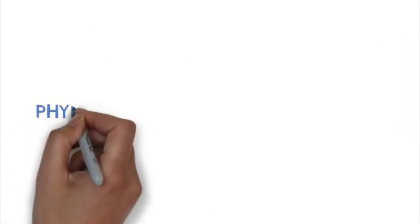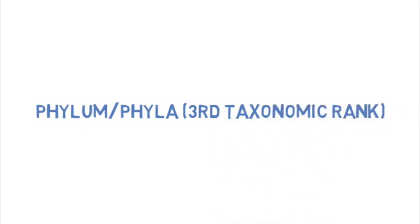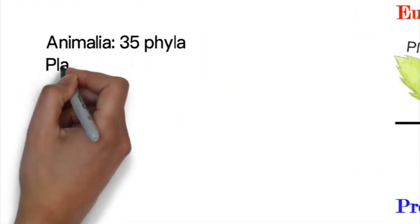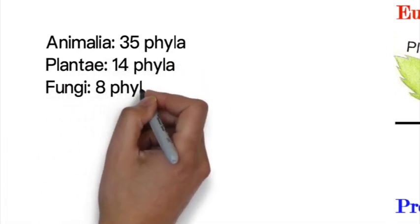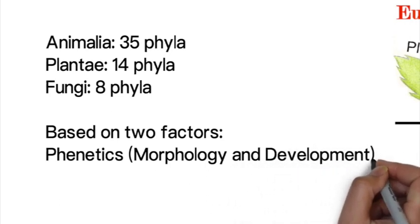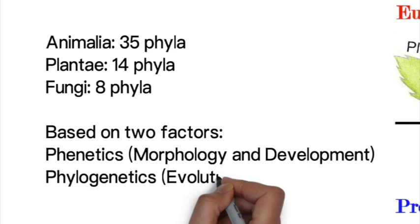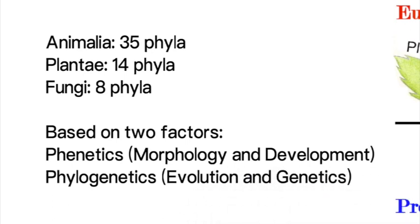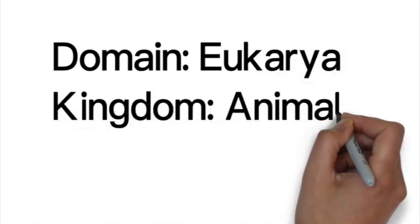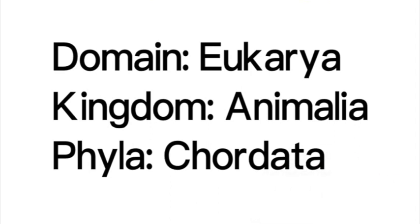Kingdoms are then broken down into the third taxonomic ranking called phylum, or phyla in plural. The animal kingdom breaks down into about 35 phyla, plants into about 14, and fungi into about eight. Phylum is based on phonetics — which covers morphology and development — and phylogenetics, which uses genetics to study how organisms are connected through evolution. For human beings, we are within the domain Eukarya, kingdom Animalia, and the phylum Chordata.